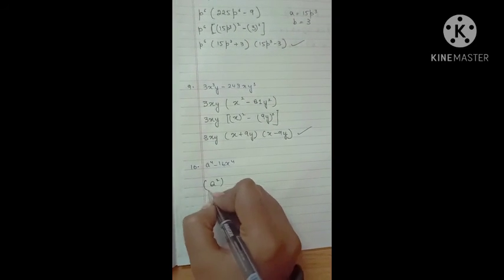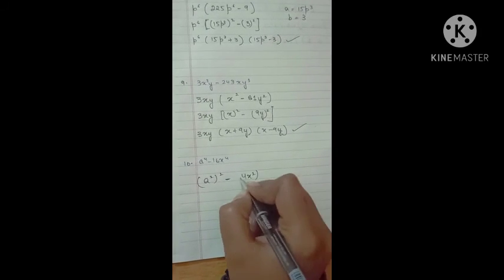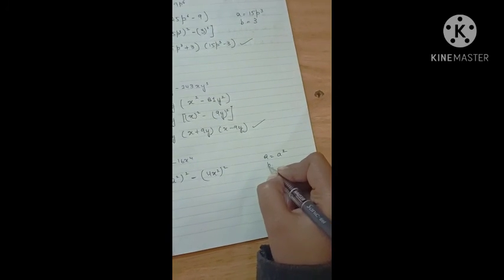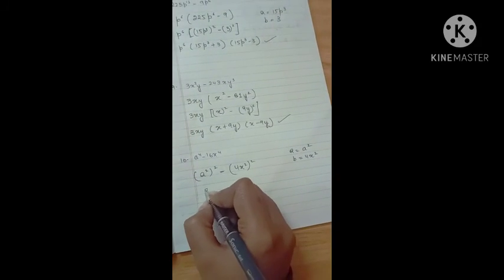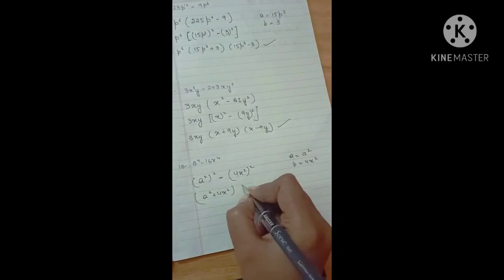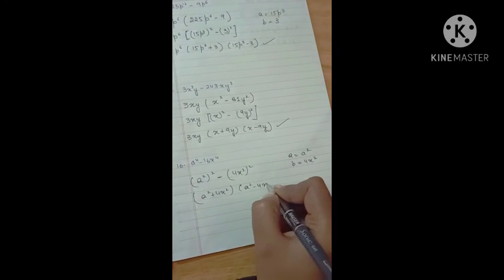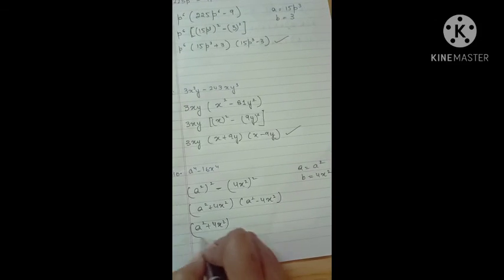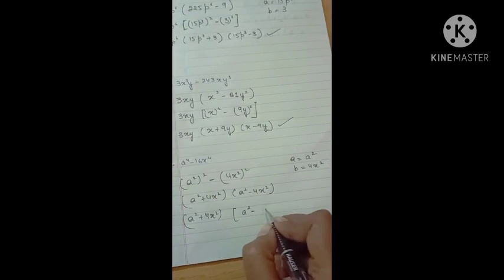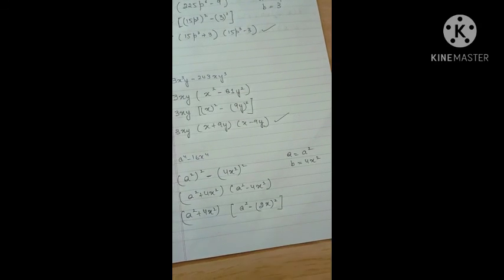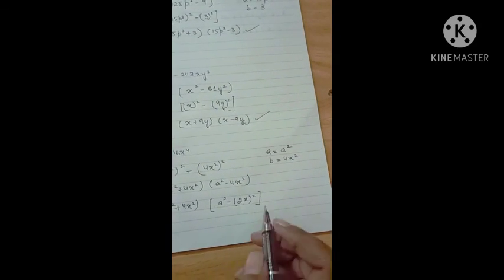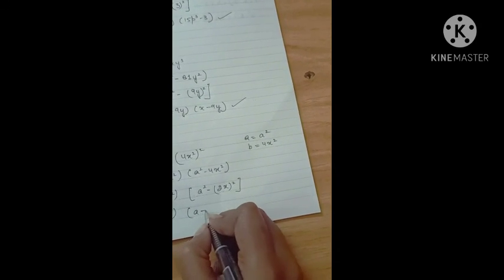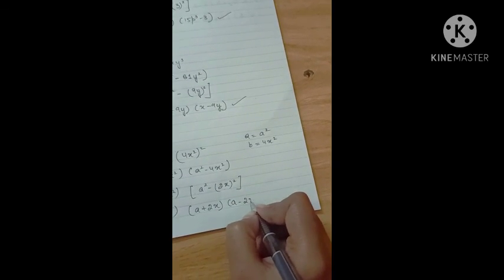Again here, we can write a⁴ - 16x⁴ as (a²)² - (4x²)². So a is a² and b is 4x². Applying the identity, we get (a² + 4x²)(a² - 4x²). Now, a² - 4x² can again be written as a² - (2x)², so applying the identity once more, we get (a² + 4x²)(a + 2x)(a - 2x).